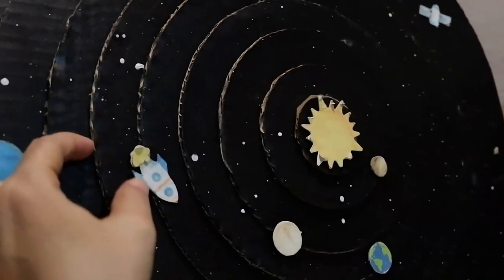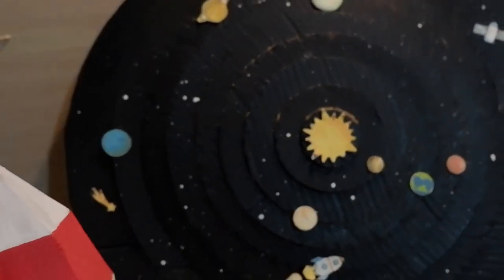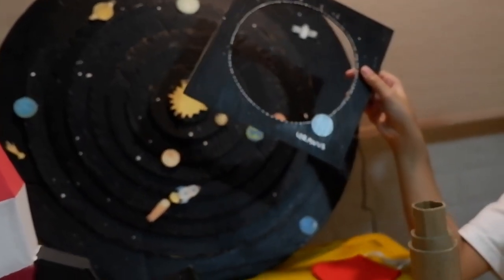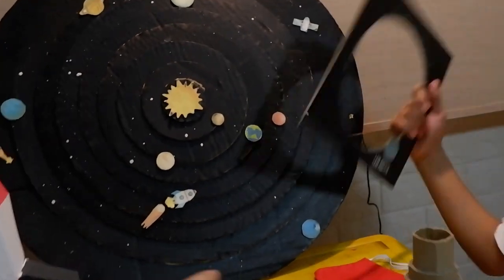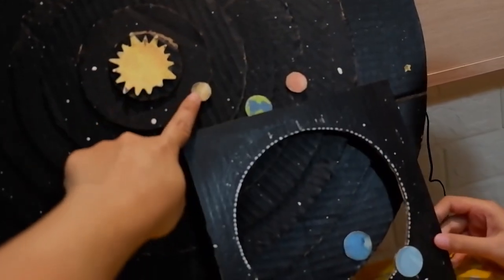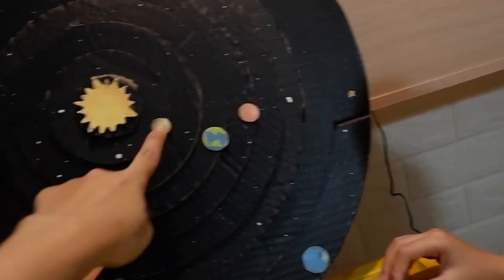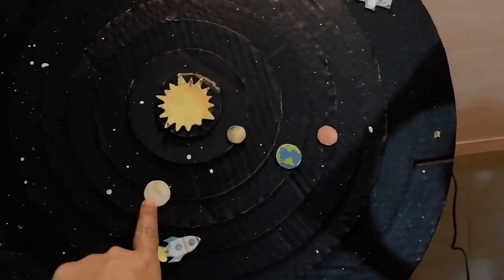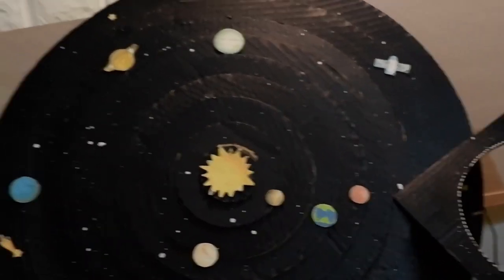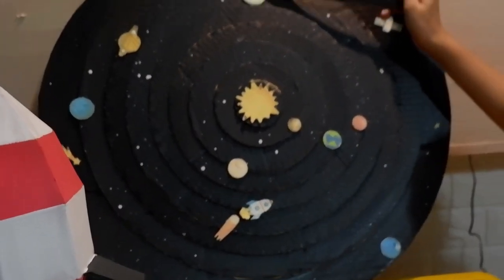Ada porosnya di tengah, ada sumbunya, makanya dia bisa muter. Ini nih yang warna biru yang ini ya? Itu bumi. Ini Uranus. Nah ini Neptunus, yang paling jauh dari matahari. Yang paling dekat itu Merkurius, Venus, Bumi, Mars, Jupiter, Saturnus, Uranus, Neptunus.